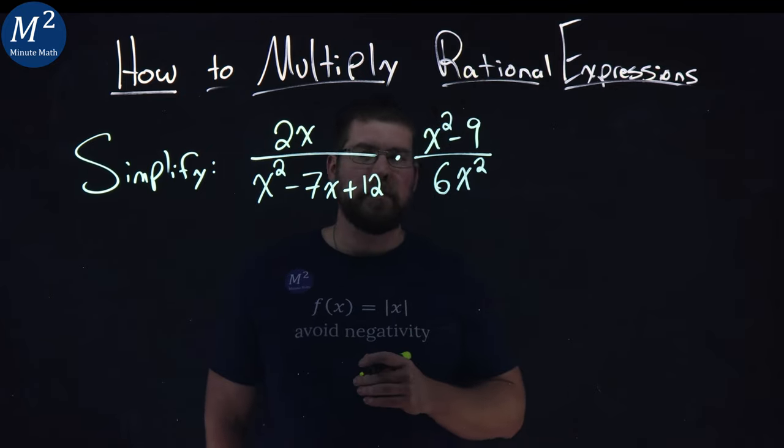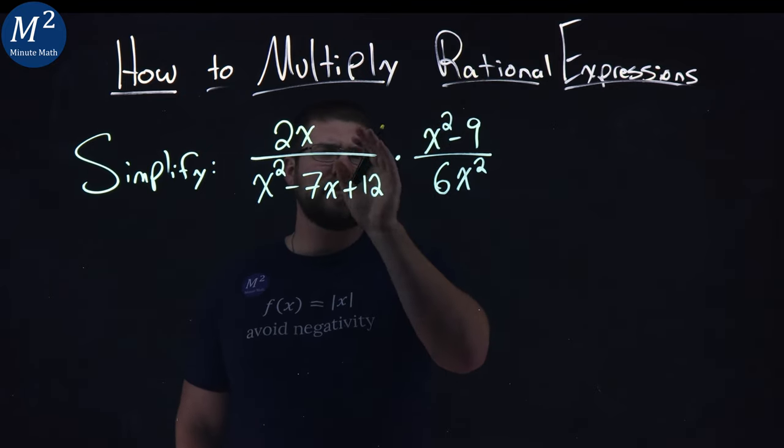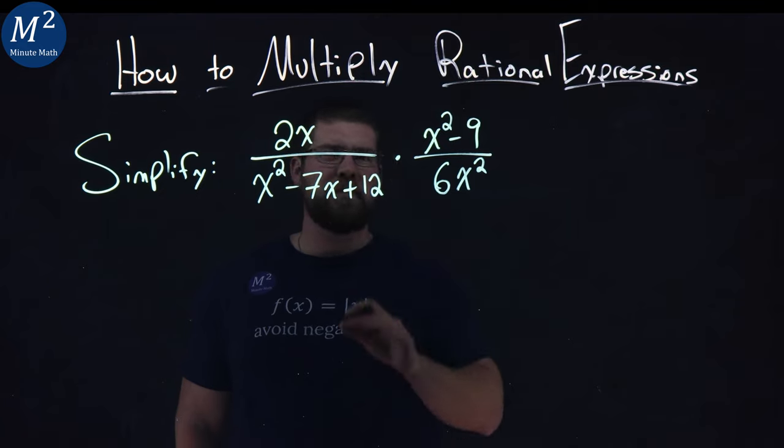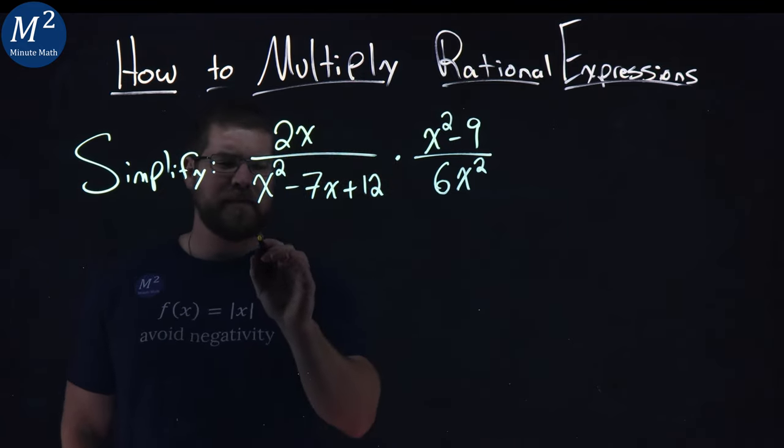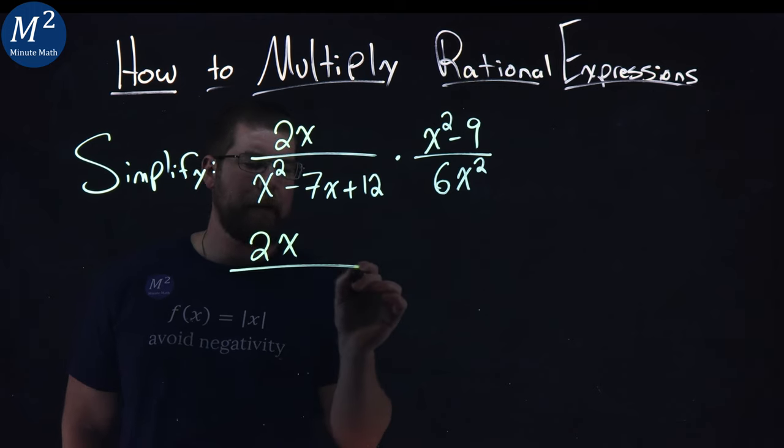The first thing I like to do here is see if I can simplify or really factor actually each part here. There's like four parts. First part here, 2x, can't really factor that, so I'm going to leave that be.